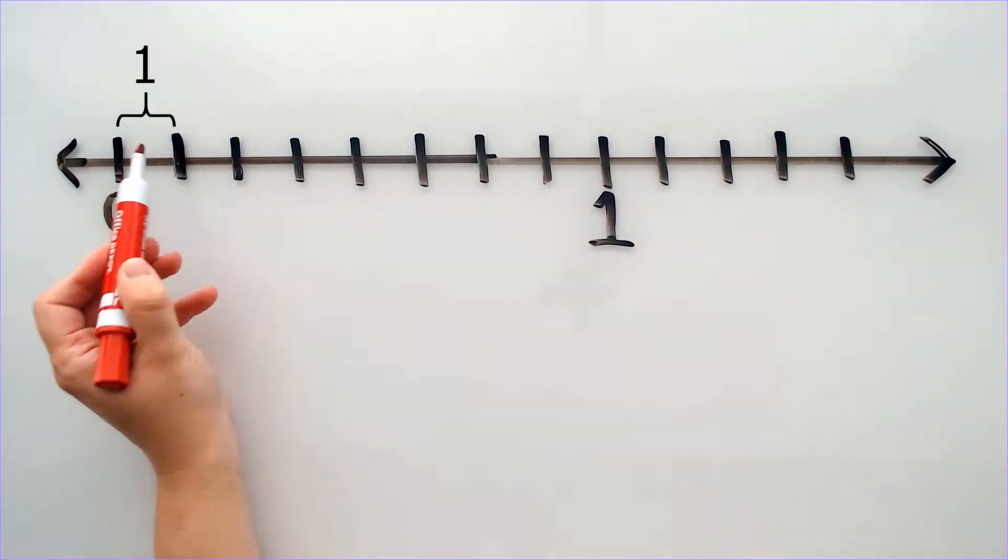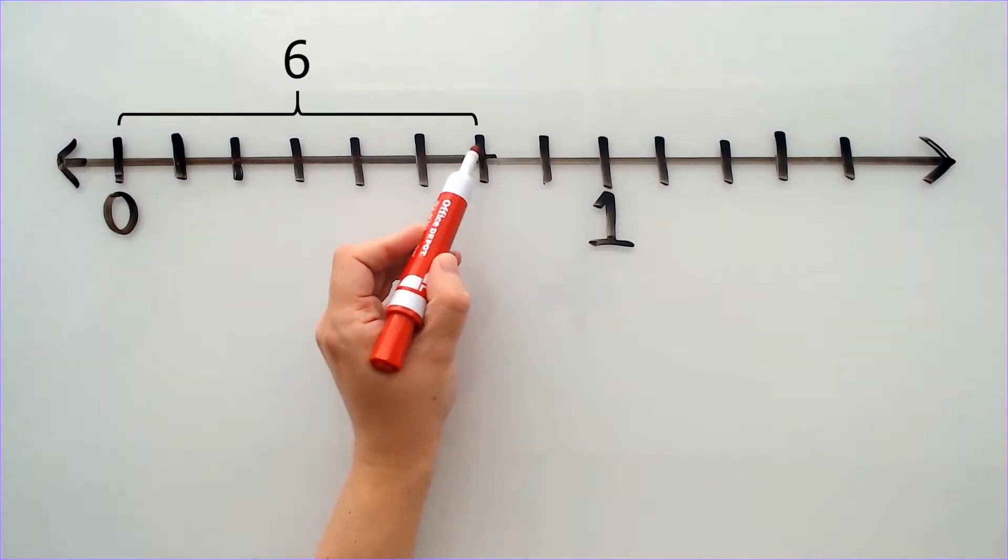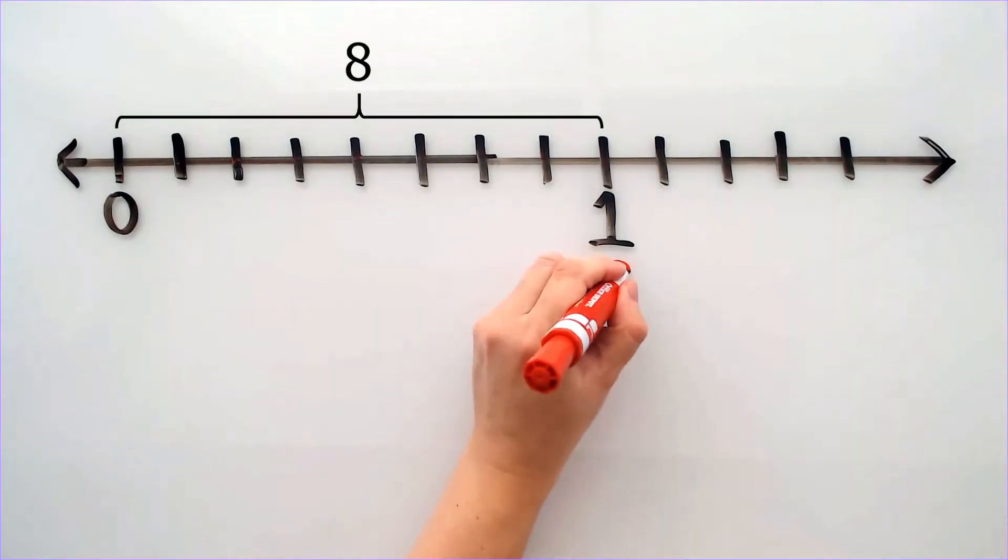0, 1, 2, 3, 4, 5, 6, 7, 8. That means 1 is 8 out of 8.